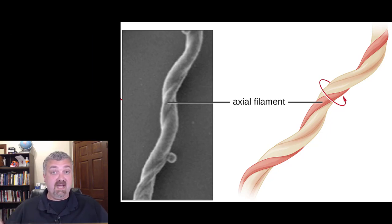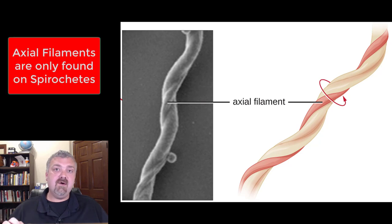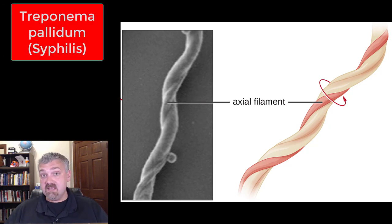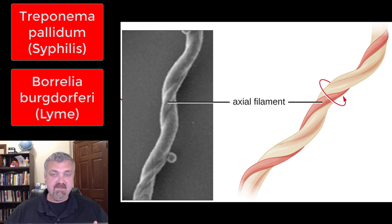So here's the key. Like other flagella, it's used for movement, but it's only going to be found in your spirochete organisms. The two key examples I'd want you to know would be Treponema pallidum, which is the causative agent of syphilis, and Borrelia burgdorferi, the causative agent of Lyme disease.